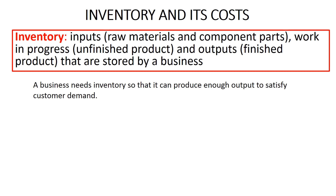A business needs inventory so that it can produce enough output to satisfy customer demand. It needs inputs ready to use so that it can make outputs. For example, a furniture manufacturing factory needs a stock of wood, varnish, glue, and nails available to make furniture. If the factory only waited for a customer's order before buying these inputs, it would take a long time, as it would first have to buy the inputs before starting the manufacturing process — and those inputs might not even be available immediately.